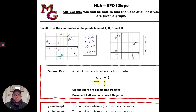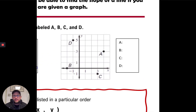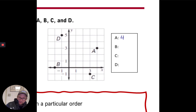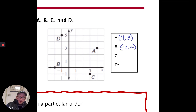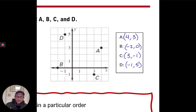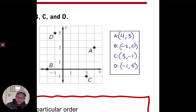You should pause the video and try to identify these four points on your own. After pausing, come back and I'll walk you through the solution. Welcome back. Point A has an x value of 4 and a y value of 3. Point B is at (negative 2, 0). Point C is at (3, negative 1). And point D is at (negative 1, positive 5). Remember, you can find the coordinate of any point by tracing down to the x axis and over to the y axis.